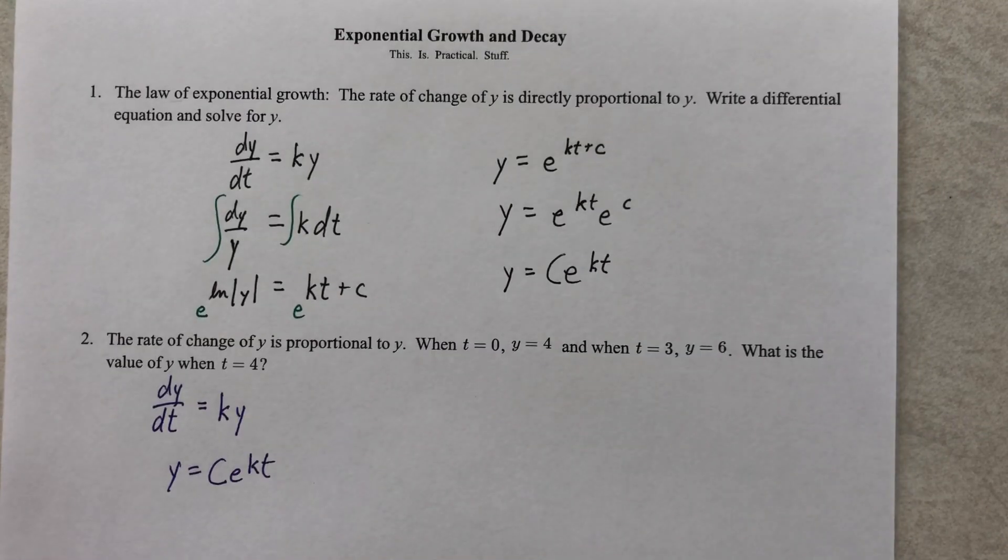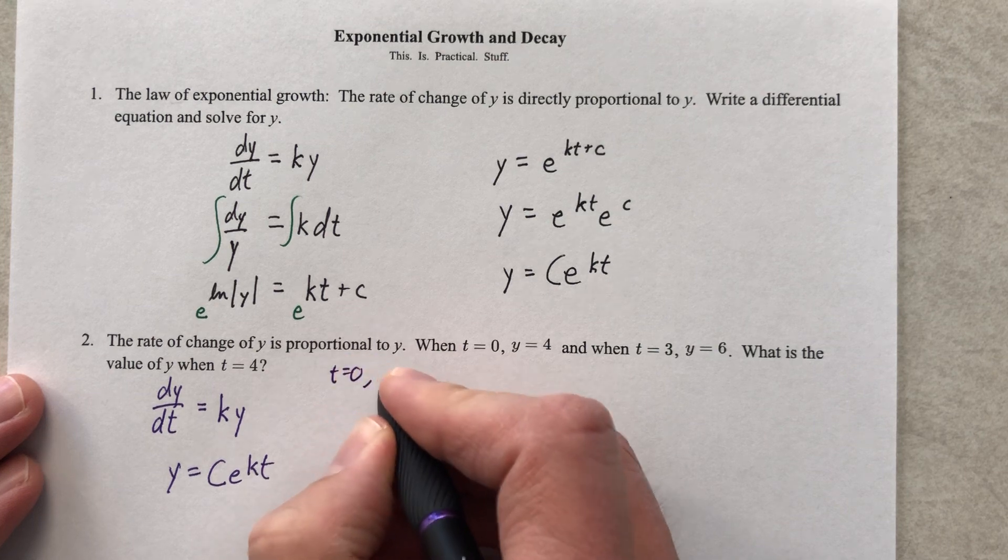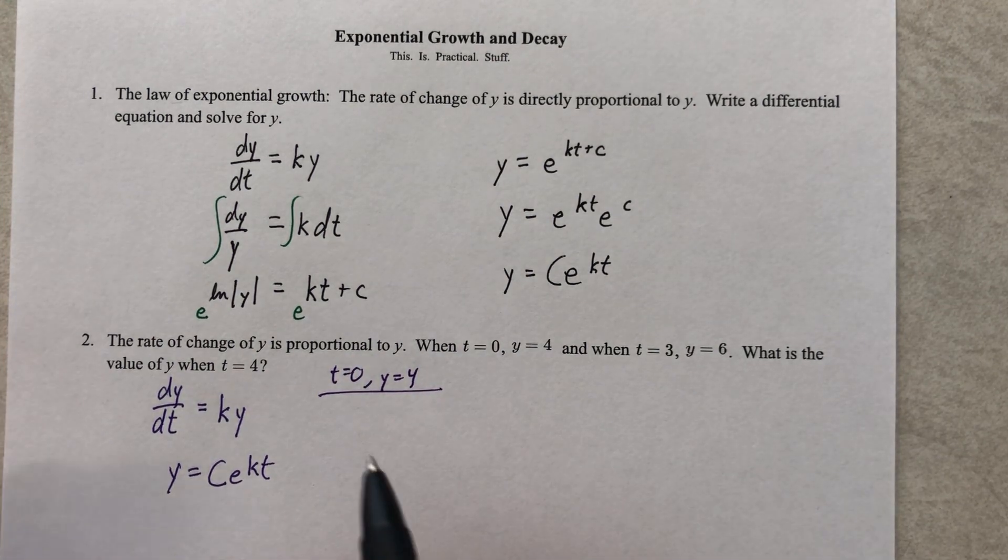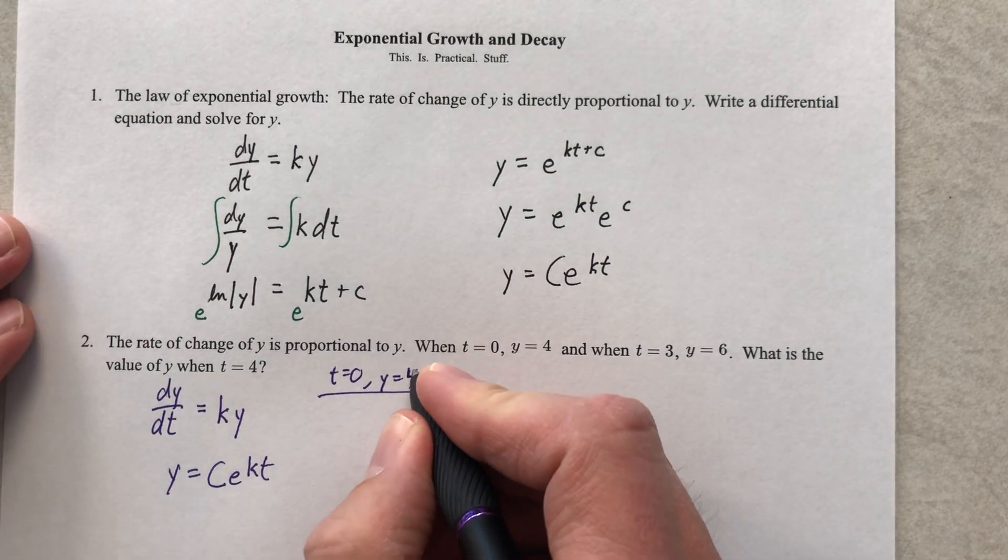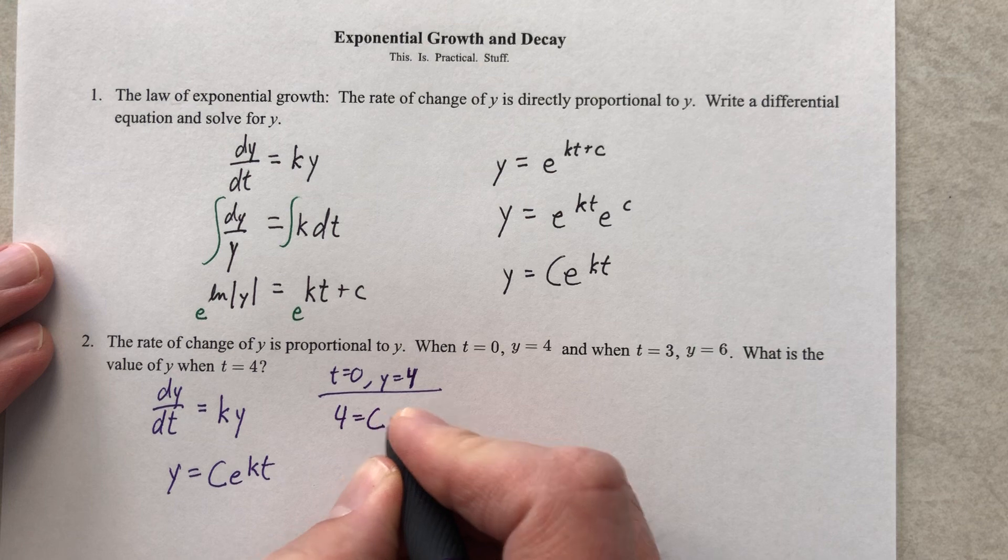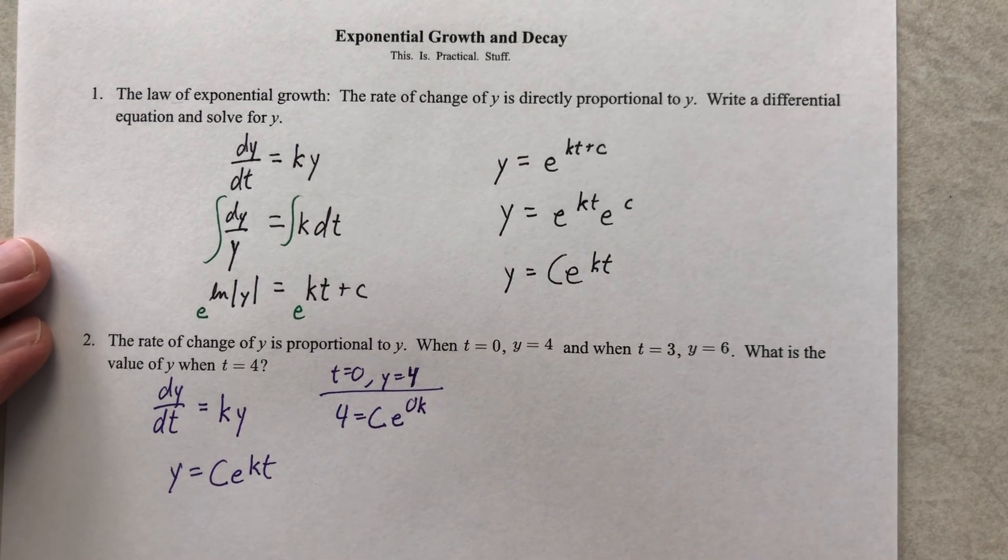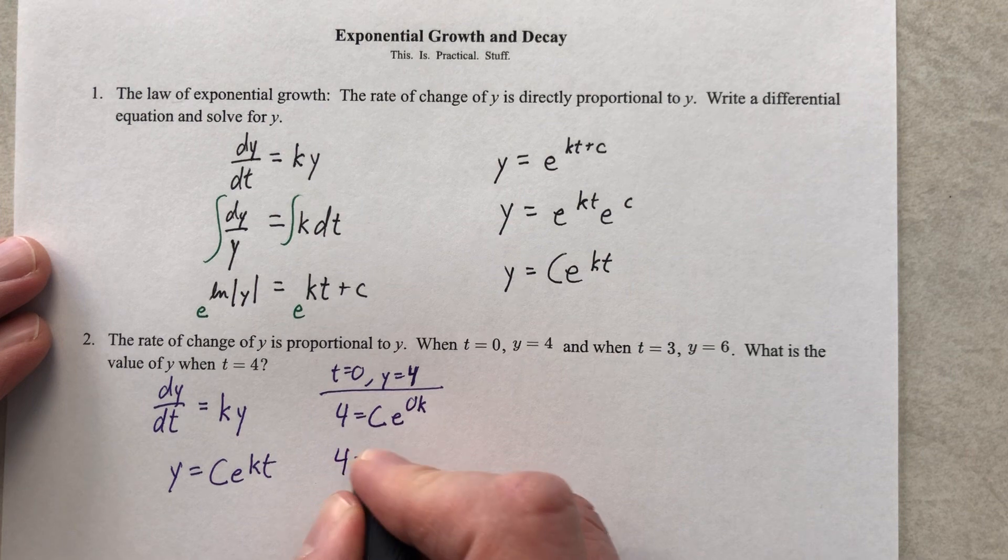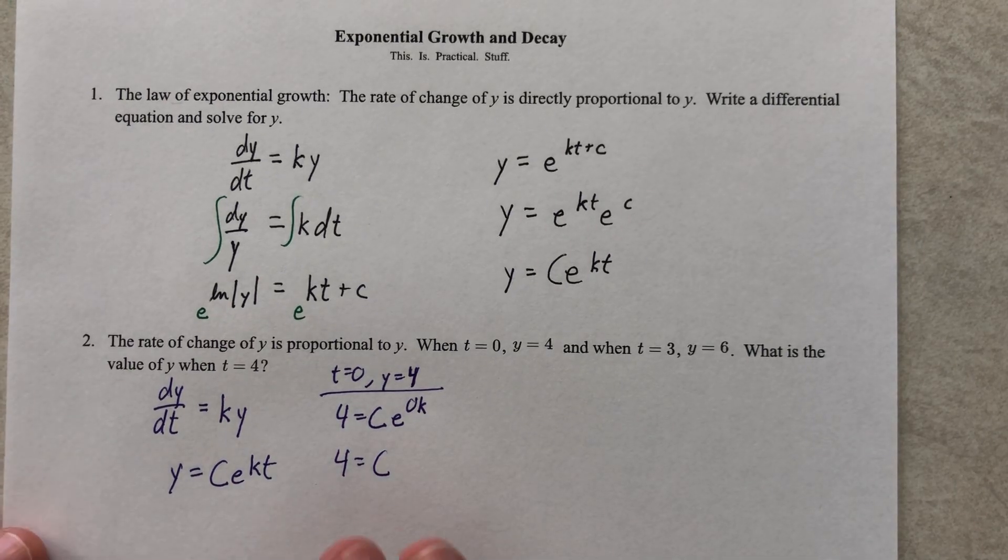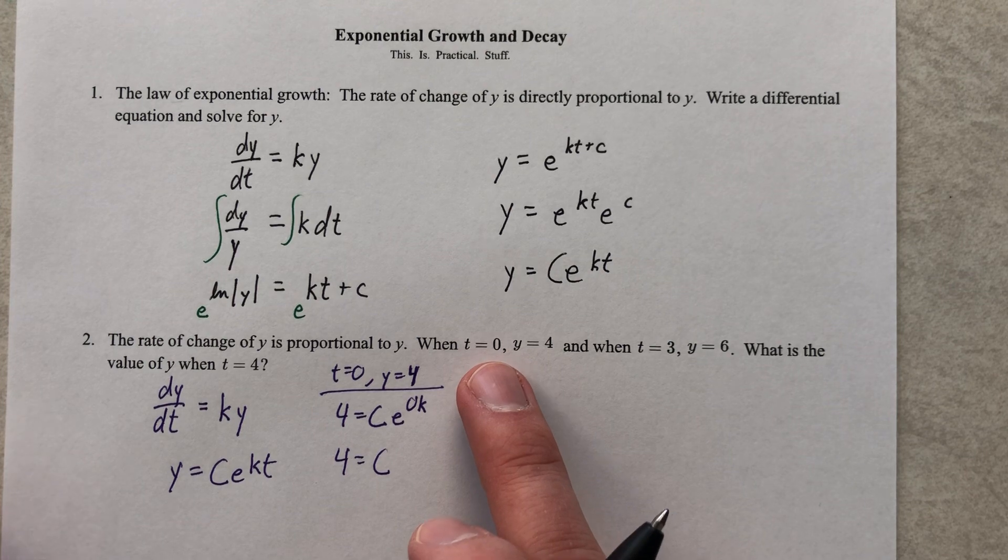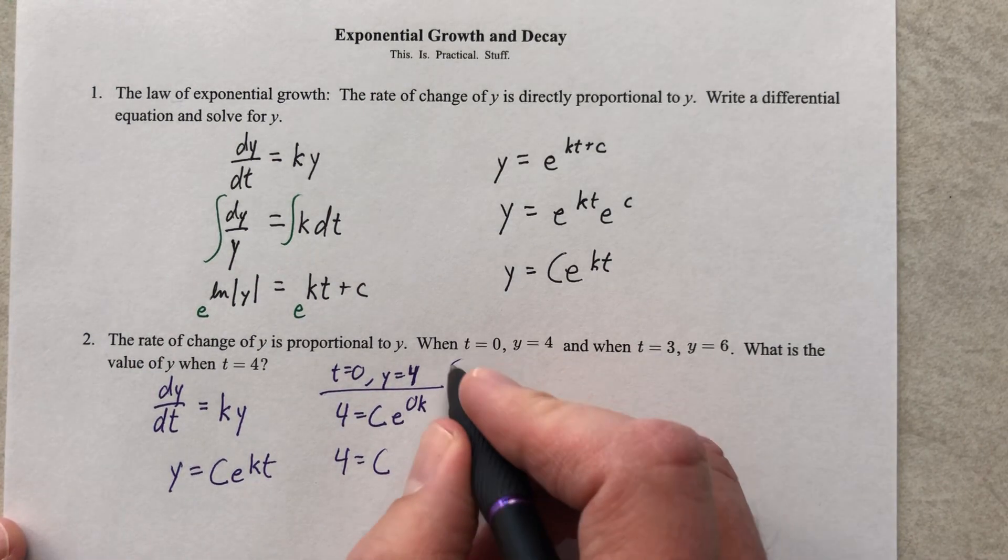What we're going to do is take the information they give us and answer the question. When t equals zero, y equals four. I'm going to take this equation and plug in zero and four. So four equals Ce to the zero k. Four equals C, and then e to the zero is one. So C is four. Whenever they tell us that we know what the Y value is when t equals zero, they're actually giving you C. So moving forward, we actually know a little bit more now.